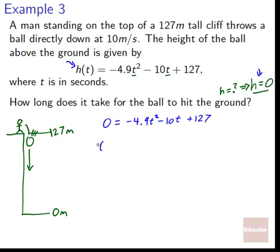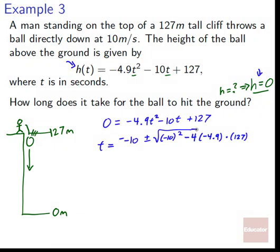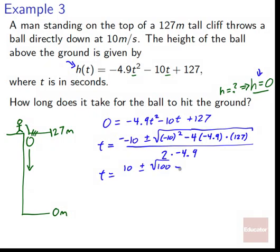We plug into the quadratic formula. We're looking at t instead of x: t = [−(−10) ± √((−10)² − 4·(−4.9)·127)] / (2·(−4.9)) = [10 ± √(100 + 2489.2)] / (−9.8).